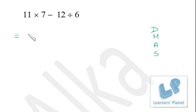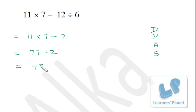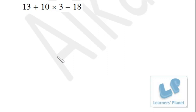So I write: 11 × 7 minus 12 ÷ 6. 12 divided by 6 is 2. Now we are left with multiplication and subtraction, so we perform multiplication first: 11 × 7 is 77, minus 2. Now 77 minus 2 is 75. So the correct answer to this problem is 75.